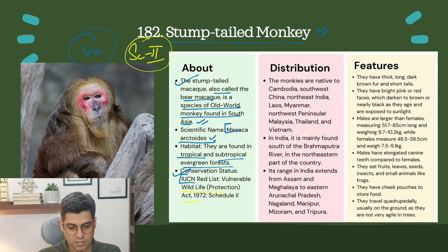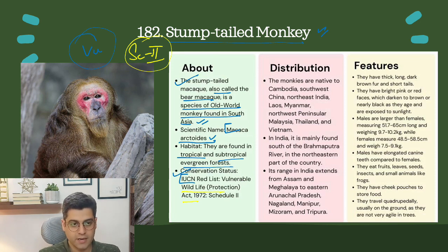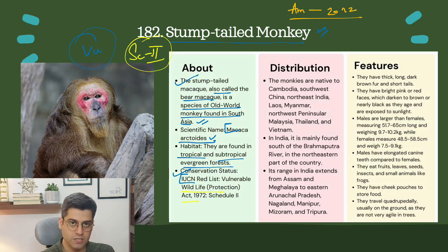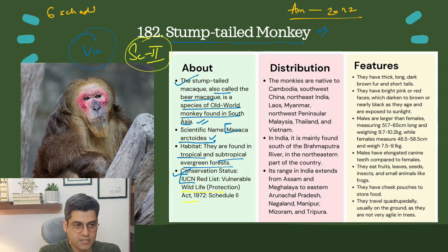Just to note, in the previous lecture we talked about the Wildlife Protection Act 1972 and its six schedules. The Amendment Act of 2022 amended those six schedules into four. There was some confusion regarding notification, but it has been notified. Those six schedules in the Wildlife Protection Act have now become four schedules.